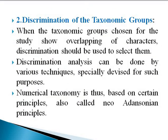The second aspect is the discrimination of the taxonomic group. When the taxonomic groups chosen for study show overlapping of characters, discrimination should be used to select them. Discrimination analysis can be done by various techniques specially devised for such purpose.